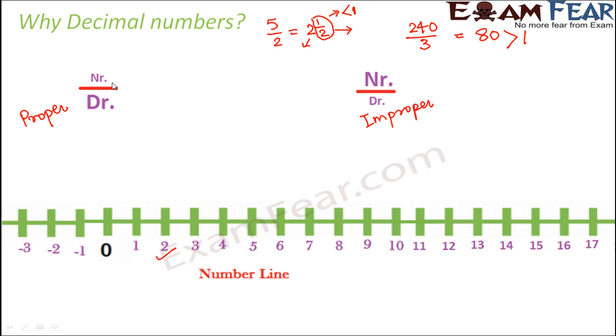So we observe that whenever your numerator is smaller than the denominator, the overall value of the fraction is always less than 1. And whenever it is the opposite, that is when the numerator is more than the denominator, the overall value of the fraction is greater than 1. Now this is something which can be very easily verified. You pick up some fractions, any fraction that comes to your mind, try to find out its value and you will see that it is less than 1 and it is greater than 1.